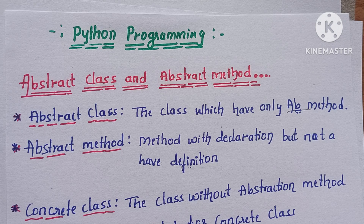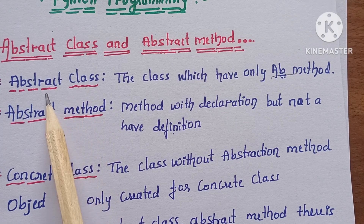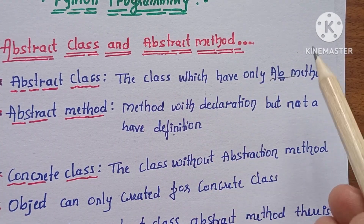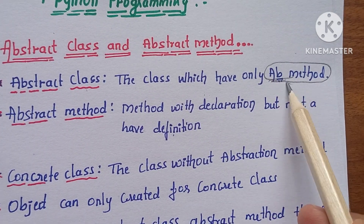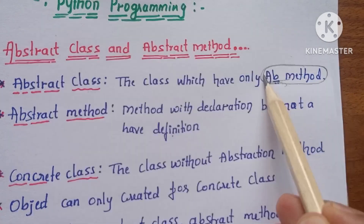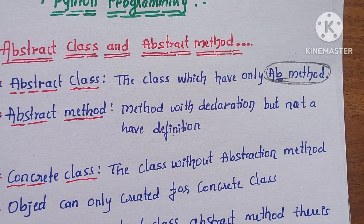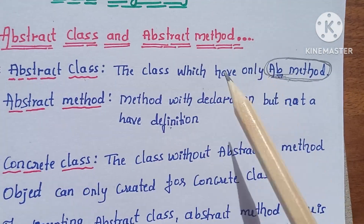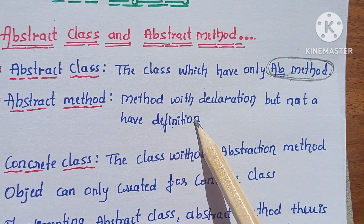So, let's begin. First, abstract class. The abstract class is the class which has only the abstract method. The abstract method is the method with a declaration but does not have a definition.